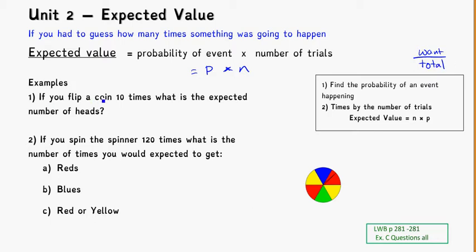So if we were to flip a coin ten times, what is the expected number of heads you would get? If you think about a coin, what are our outcomes? We've got heads or tails, and if it's a fair coin, we'd expect it to happen as a head half the time and as a tail the other half of the time.